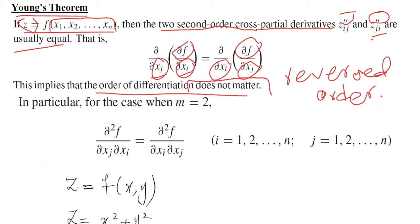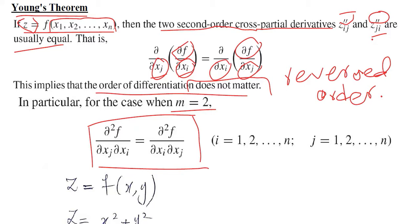The reversed order is the main thing we are trying to highlight. It does not matter whether you differentiate with respect to the first variable or the second variable — the answer will be the same. In the case where the number of variables equals 2, we have this specific formula: two terms that are equal, with the order of differentiation reversed.